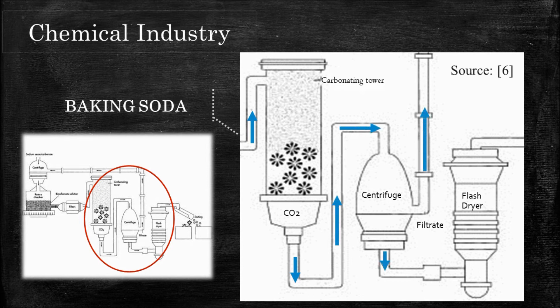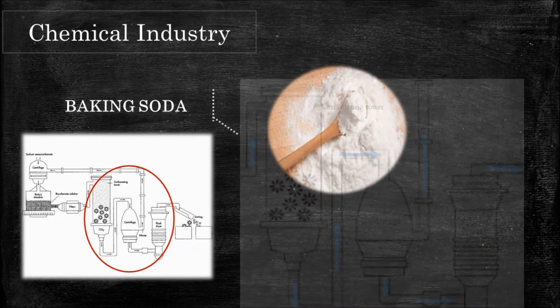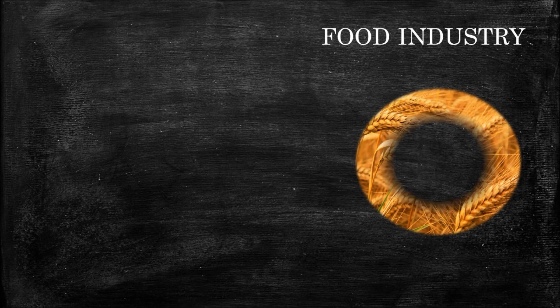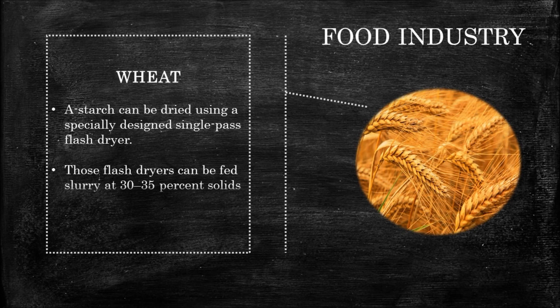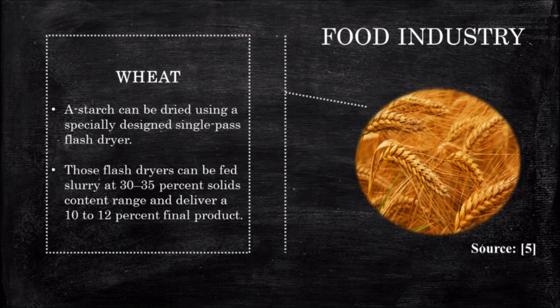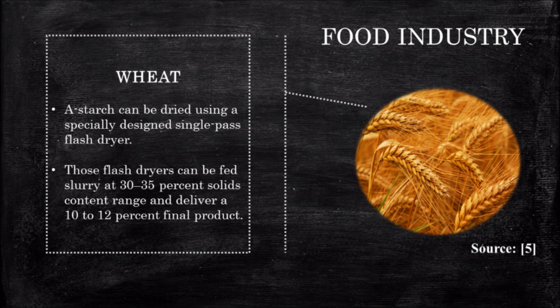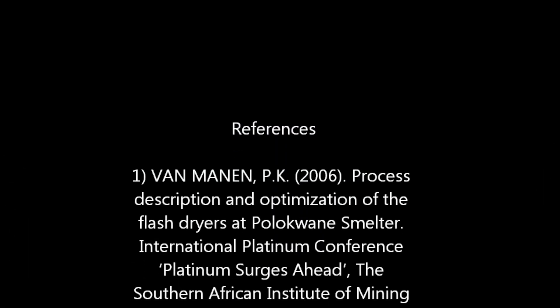In the food industry, starch can be dried using a specially designed single-pass flash dryer. Those flash dryers can be fed slurry at 30-35% solids content range and deliver a 10-12% final product.